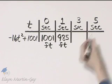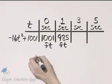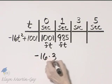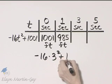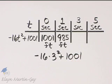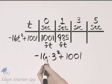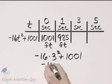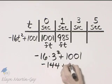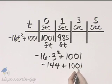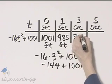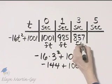What about three seconds? Let's go ahead and write this down. That's negative sixteen times three squared plus one thousand one. Well three squared is nine, nine times negative sixteen, that's negative one hundred forty-four plus one thousand one, and if you find this sum, you'll find that it's eight hundred fifty-seven. Again, that's feet.